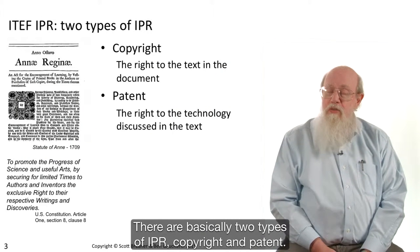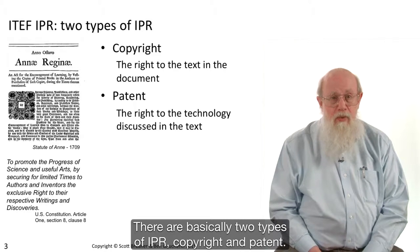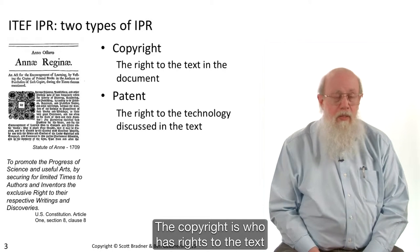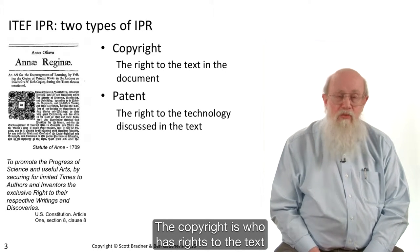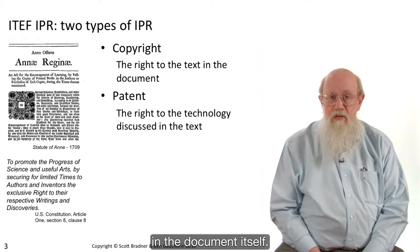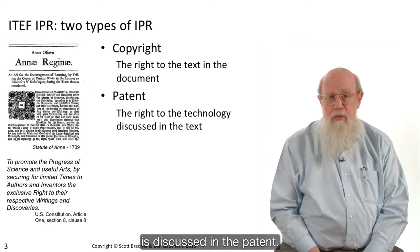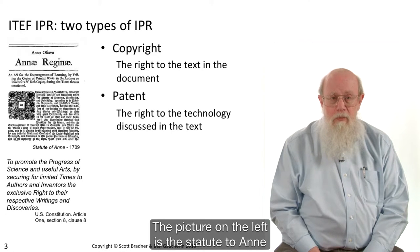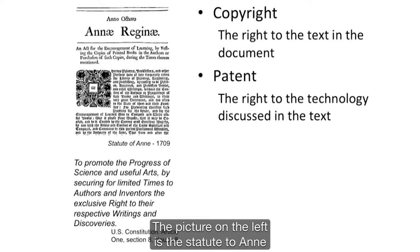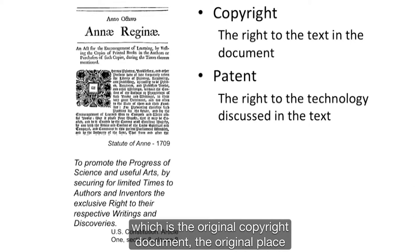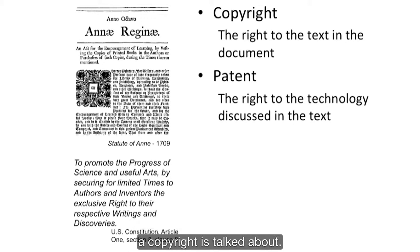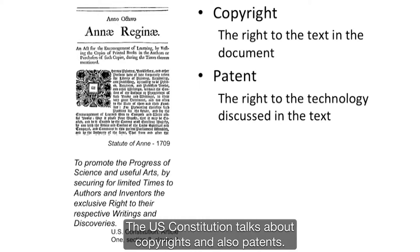There are basically two types of IPR: copyright and patent. Copyright is who has rights to the text in the document itself. Patent rights is who has rights to the technology that is discussed in the patent — it's a different concept. The picture on the left is the Statute of Anne, which is the original copyright document. It's the original place that copyright is talked about. The U.S. Constitution talks about copyrights and also patents.